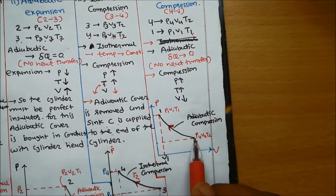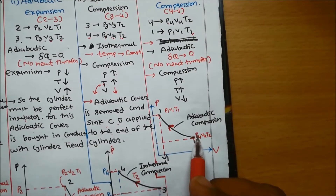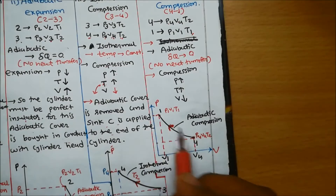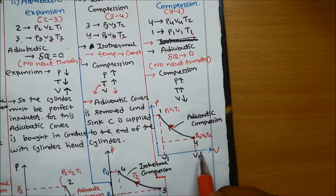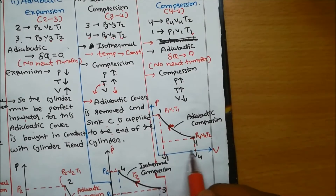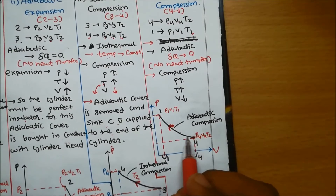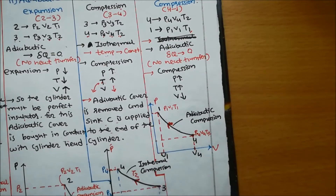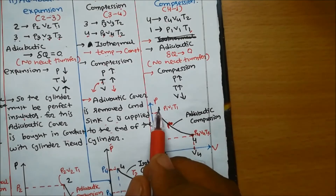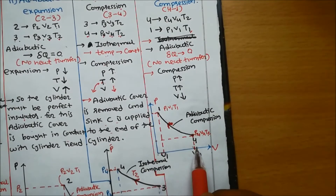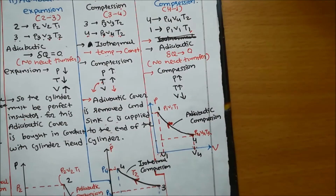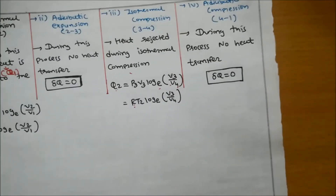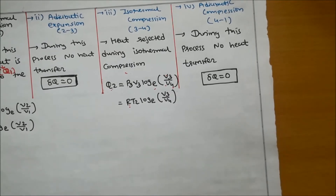On the PV diagram, the adiabatic compression process goes from point 4 to point 1. Pressure increases from P4 to P1, volume decreases from V4 to V1, and temperature increases from T2 to T1. During this adiabatic compression process, there is no heat transfer — delta Q equals zero.